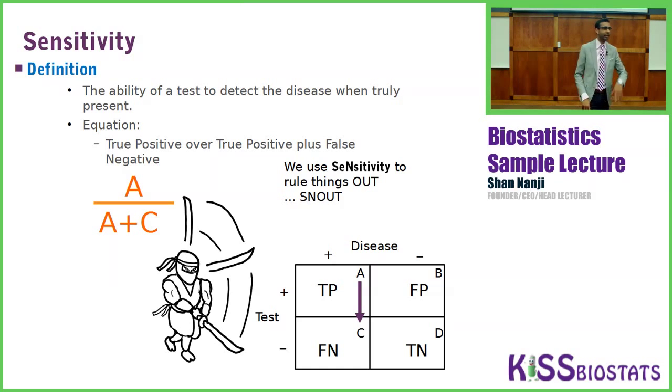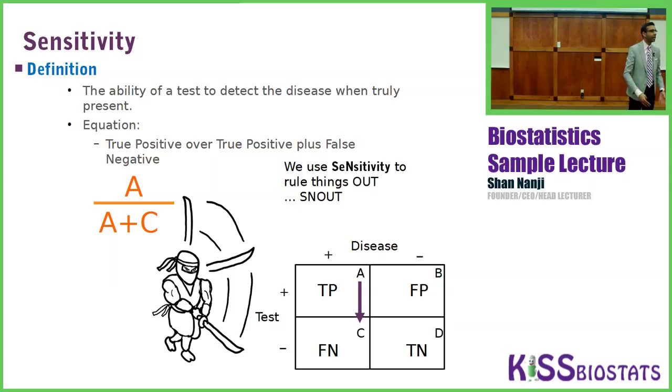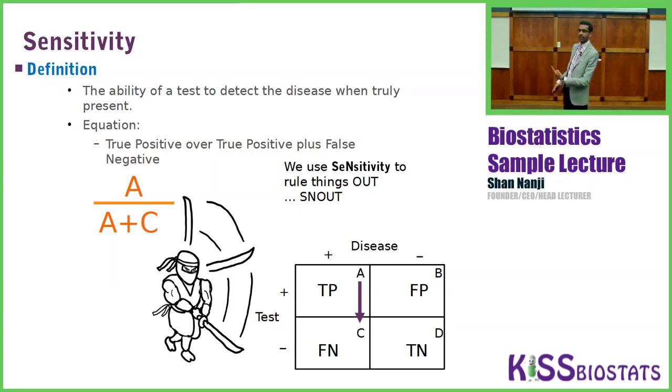That's A over A plus C — true positive over true positive plus false negative. There's a ninja analogy: the ninja is taking a sword and going down from A to C. Sensitivity is used to rule things out — remember the mnemonic SNOUT: SN (sensitivity) OUT (rules things out).